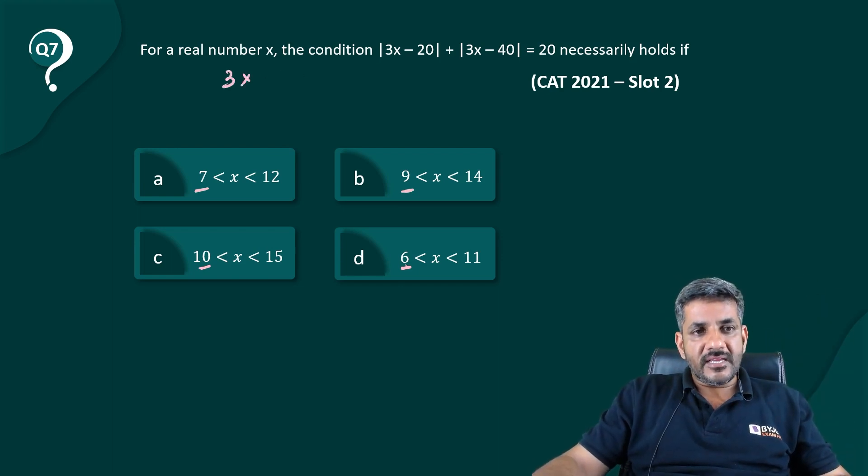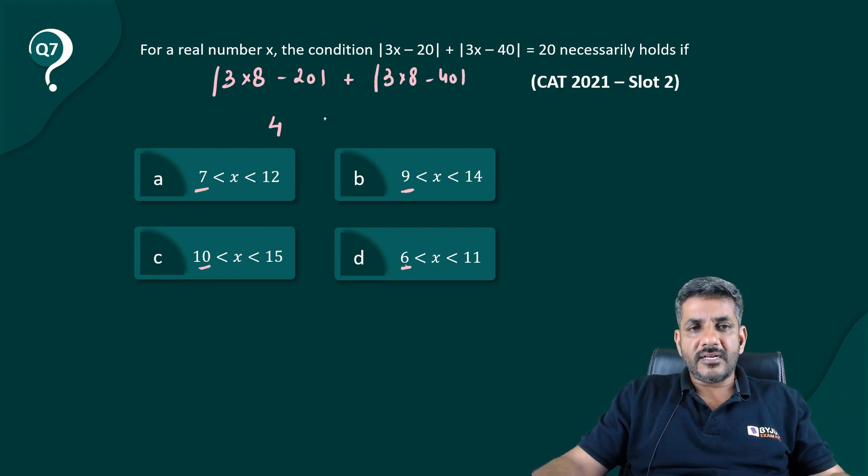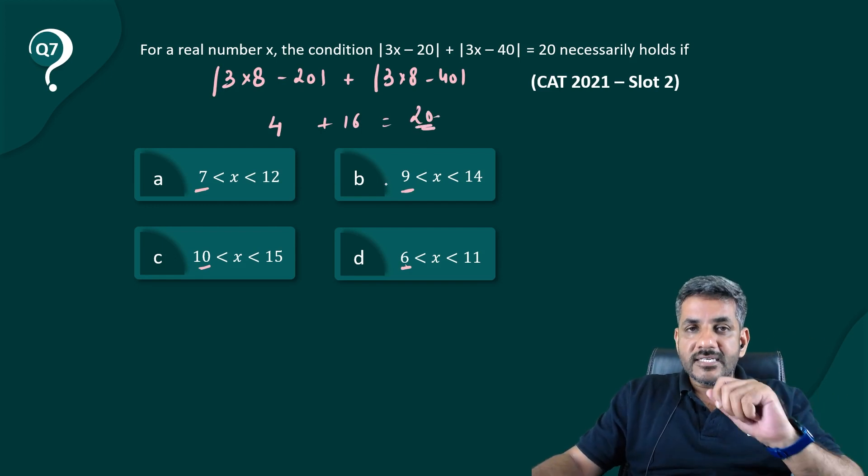If I put 8, I get 3 × 8 that is 24 - 20, which gives me 4. The next is 3 × 8, 24 - 40 which is -16. Modulus of that is 16 and it satisfies.